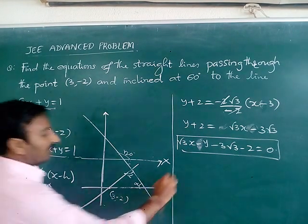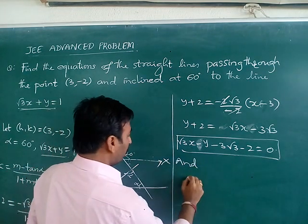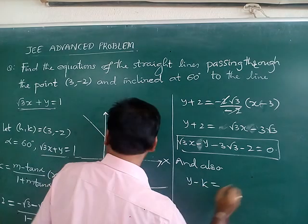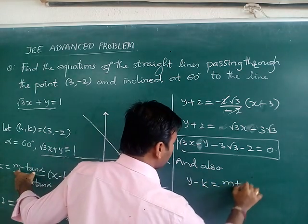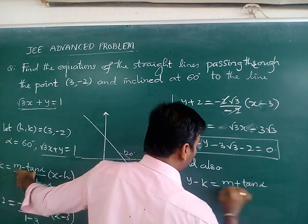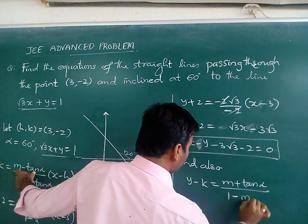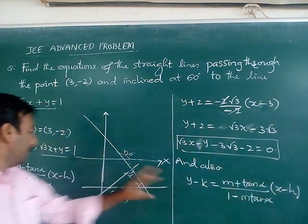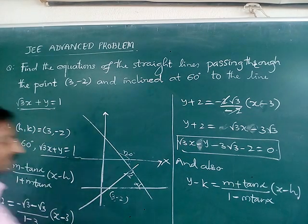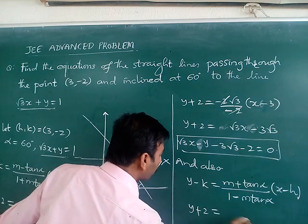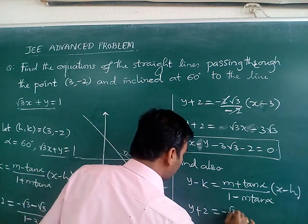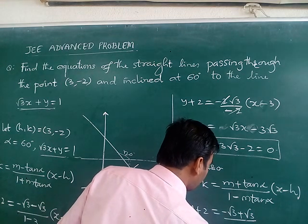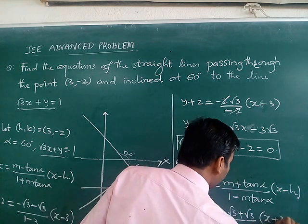And similarly, the second one, also y minus k equal to (m plus tan alpha) by (1 minus m tan alpha) into (x minus h). Let us substitute the same values once again, which are y plus 2 equal to minus root 3 plus root 3 divided by 1 minus minus root 3 times root 3 into (x minus 3).